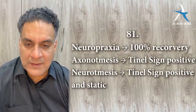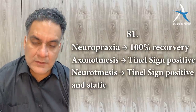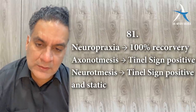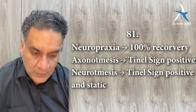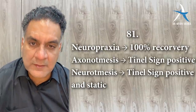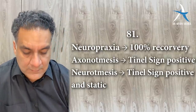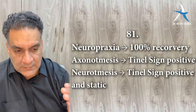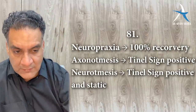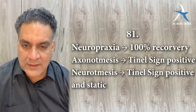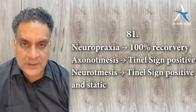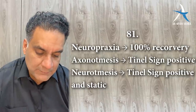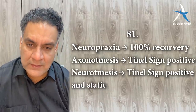Point number eighty-one: nerve injuries — Seddon classification — neuropraxia, axonotmesis, and neurotmesis. Neuropraxia: 100% recovery. Axonotmesis: Tinel's sign positive and progressive — it will recover at a rate of 1 mm per day — good prognosis. Neurotmesis: complete nerve transection — Tinel's sign positive but starting. Point number eighty-two: EMG is the best test for nerve recovery.